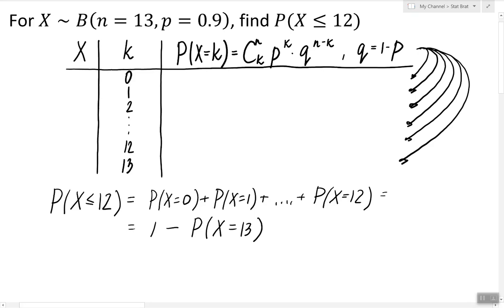Well, there's only one value that doesn't satisfy this condition, and that value is 13. So the probability of X being less than or equal to 12 equals 1 minus the probability of X equals 13. This probability rule allows us to save a lot of time—instead of finding all those probabilities, we can just focus on finding this one probability and then subtracting it from 1.